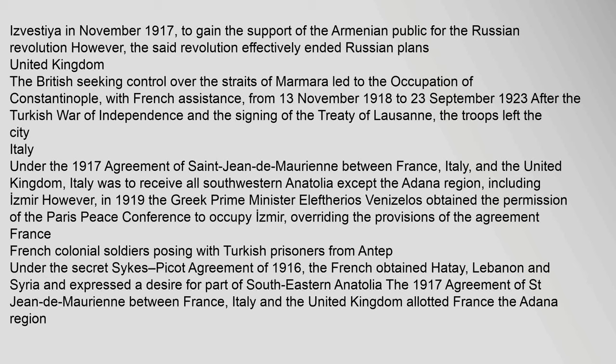United Kingdom: The British, seeking control over the Straits of Marmara, led to the occupation of Constantinople with French assistance from 13 November 1918 to 23 September 1923. After the Turkish War of Independence and the signing of the Treaty of Lausanne, the troops left the city. Italy: Under the 1917 Agreement of Saint-Jean-de-Maurien between France, Italy, and the United Kingdom, Italy was to receive all southwestern Anatolia except the Adana region, including Izmir.